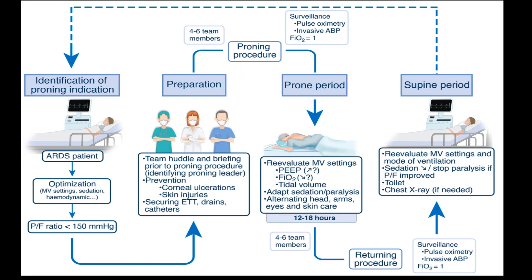In summary: first identify the patient most likely to benefit from proning. Always have a team with a team leader and assign duties to each member. Maintain a checklist. Surveillance can be done with SpO2 and invasive arterial pressure. Perform 2 to 3 arterial blood gases in between to adjust ventilatory settings. Supine the patient after 16 to 18 hours, monitor changes, and document any adverse events.